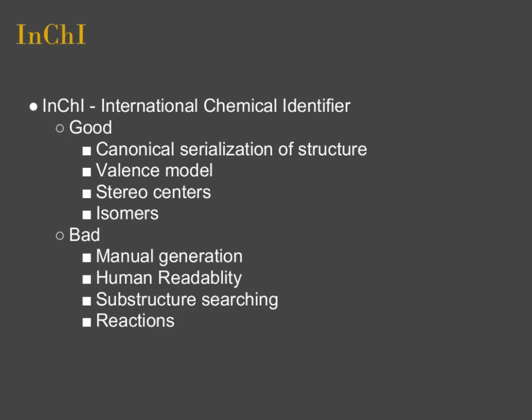InChI, or International Chemical Identifier, has a lot of good things and a lot of bad things. Some of the good things: it claims to be canonical, and it can capture some more information that other models cannot — stereocenters and isomers, for example. Some of the bad things: you can't generate it manually, so it takes a computer to generate an InChI encoding. Pretty complex algorithms are used to generate these InChI strings. Parts of it are human readable, but parts are not. It's not great at substructure searching, and you cannot encode reactions with it as you could with Sybyl or SMIRKS.